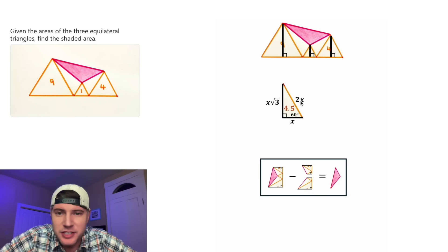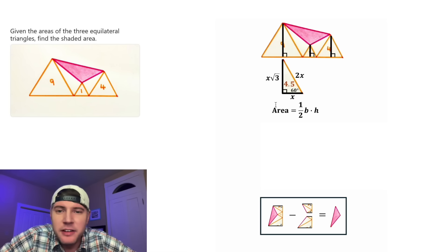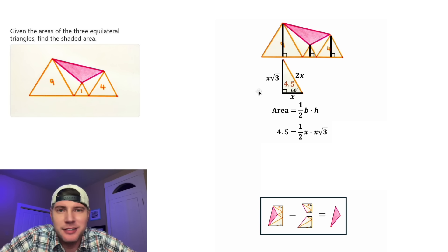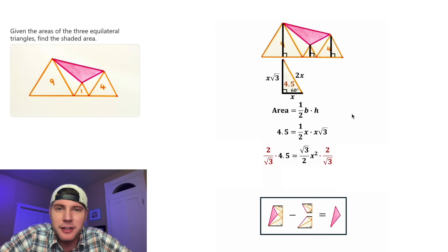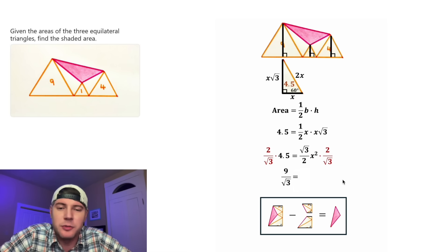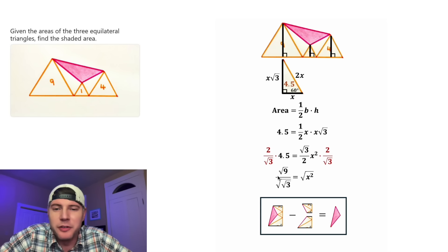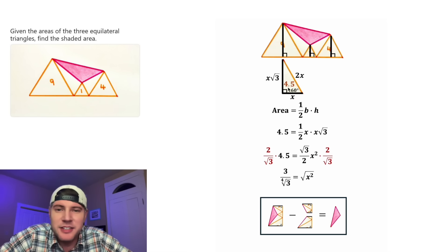Now that we know the area of the triangle and all the sides in terms of X, we have enough information to solve for X. The area of the triangle is equal to 4.5, the base is equal to X, and the height is equal to X root 3. So 4.5 equals one-half times root 3 over 2 times X squared. To get X squared by itself, let's multiply both sides by the reciprocal, which is 2 over root 3. On the left-hand side, 2 times 4.5 is 9, divided by root 3. On the right-hand side, everything cancels, leaving X squared. Taking the square root of both sides: the square root of 9 is 3, and the square root of root 3 is the fourth root of 3, so X equals 3 over the fourth root of 3.